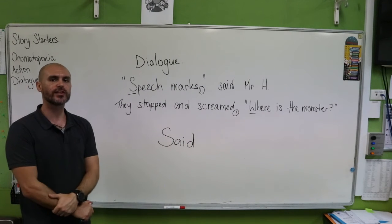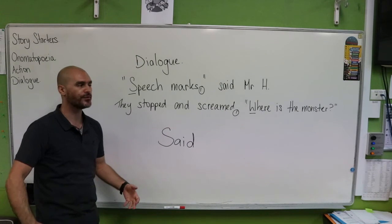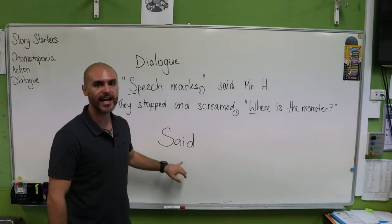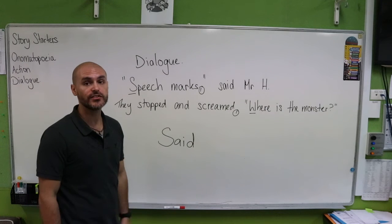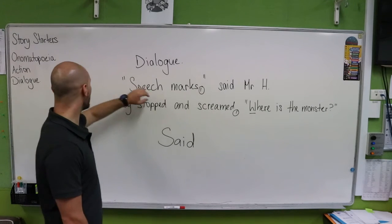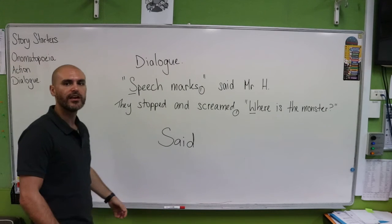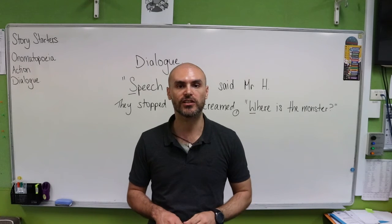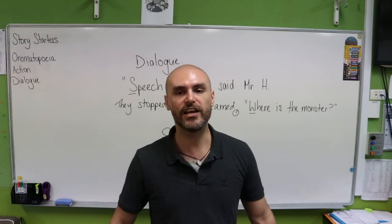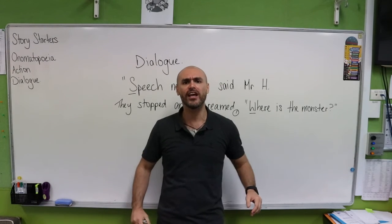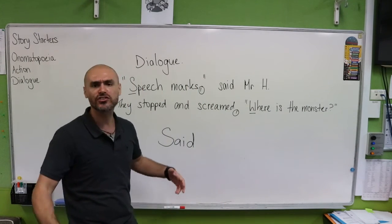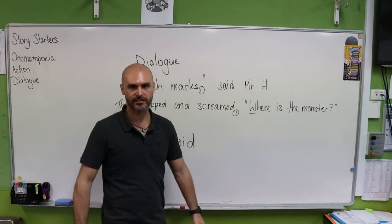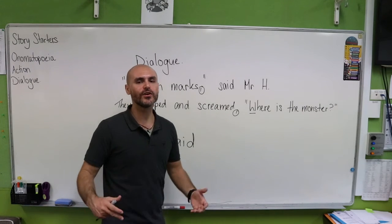Finally, let's have a quick look at the word 'said.' Said is a word that we use all too often. Said is an okay word to use, but coming from action and onomatopoeia, our characters might not just be saying how they're feeling. If it's a dangerous situation, our characters might be whispering. If it's a loud situation with a lot going on, our characters might be yelling or screaming. Other options include 'cried with joy.' We need to look at all the different words we can use instead of said.